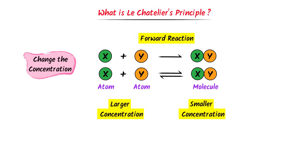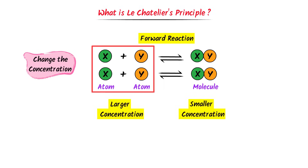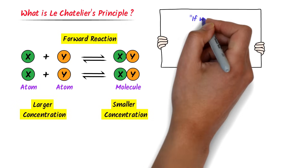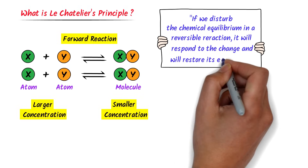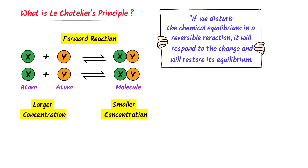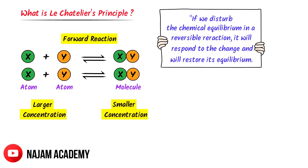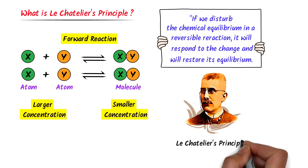When two molecules are completely formed, the system will restore its chemical equilibrium — the rate of forward reaction becomes equal to the rate of backward reaction, because four atoms react together to form two molecules and two molecules break down to form four atoms. Overall, we learn that if we disturb the chemical equilibrium of a reversible reaction, it will respond to the change and will restore its chemical equilibrium. This is what Le Chatelier's principle states.